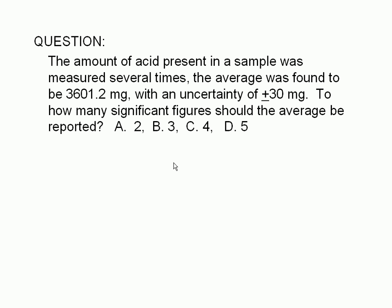The amount of acid present in a sample was measured several times, and the average was found to be 3,601.2 milligrams with an uncertainty of ±30 milligrams. To how many significant figures should the average be reported? 2, 3, 4, or 5?